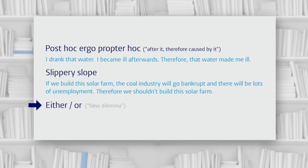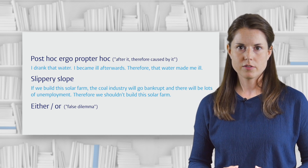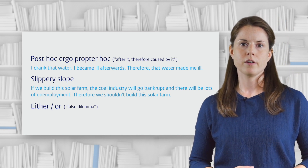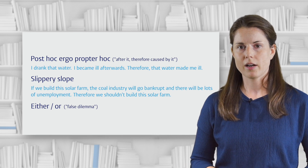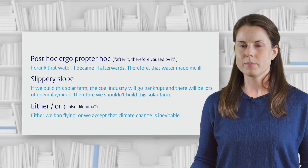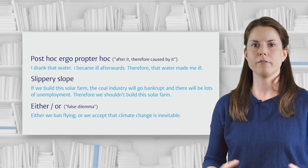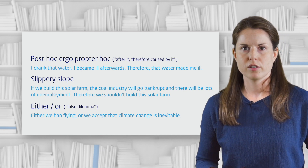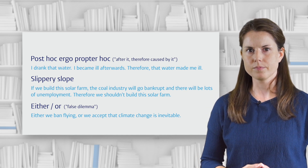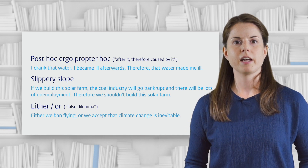An either-or, or false dilemma fallacy, is where you create a false dilemma. It involves presenting a situation as if it's a choice between two alternatives in order to force the reader towards a certain conclusion, when in reality the situation may not be so black and white. For example: either we ban flying or we accept that climate change is inevitable. But maybe we don't have to completely ban flying — maybe we could reduce it or use other measures to encourage more environmentally friendly choices. This creates a dilemma to win an argument, but it's not an accurate representation of reality.